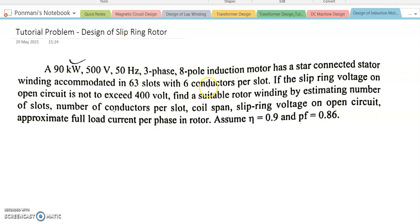The given problem is a 90 kilowatt, 500 volt, 50 hertz, three-phase, eight-pole induction motor with a star-connected stator winding accommodated with 63 slots and 6 conductors per slot. If the slip ring voltage on open circuit is not more than 400 volts, find a suitable rotor winding by estimating the number of slots, conductors per slot, coil span, slip ring voltage, and full load rotor current.